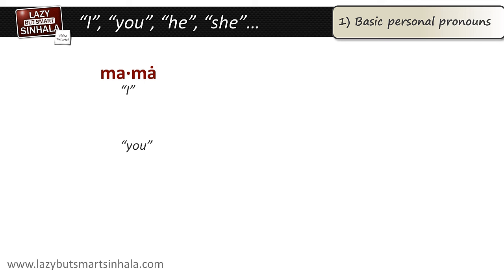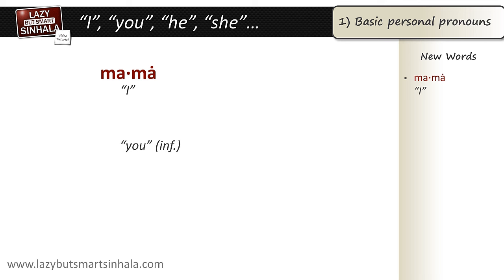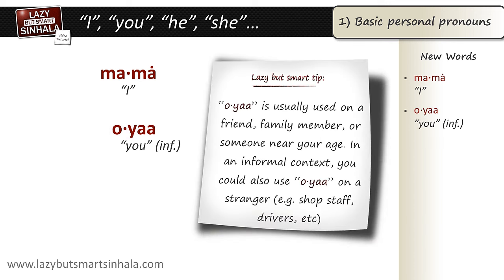During this episode and all future episodes, to help you keep track of any new words I introduce, I'll be adding them to the sidebar on your right. Now, getting back to the word 'you' — in this episode we'll be looking at the informal word for you, which is oyaa. Oyaa is usually used with a friend, a family member, or someone near your age in an informal context.